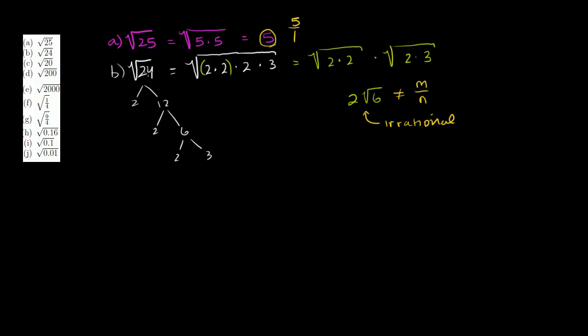A quicker way to do this: you can say 4 goes into 24, and 4 is a perfect square. Take a 4 out — this is 4 times 6. Square root of 4 is 2, leave the 6 in, and you get 2 times the square root of 6.